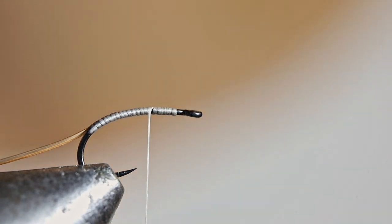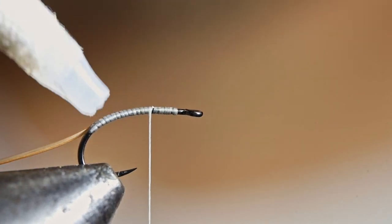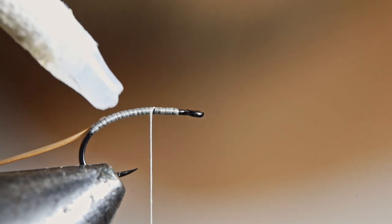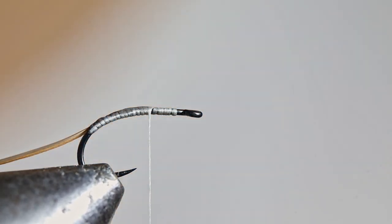Right, I'm going to wrap my thread forward to about there. Once again, about two thirds of the way. Now, I'll just add a tiny bit of super glue to the body, because this will make it so much stronger.